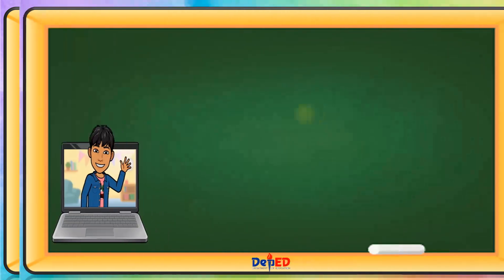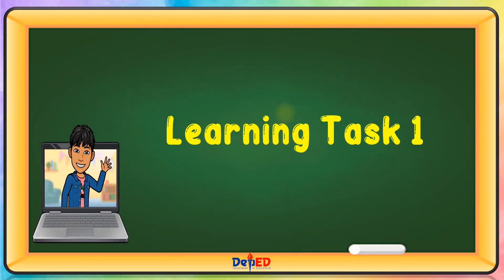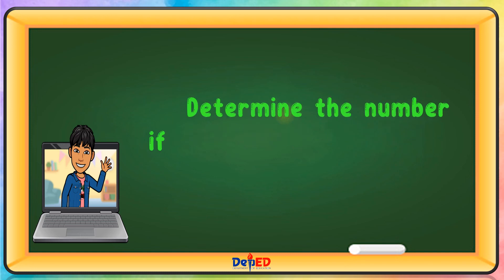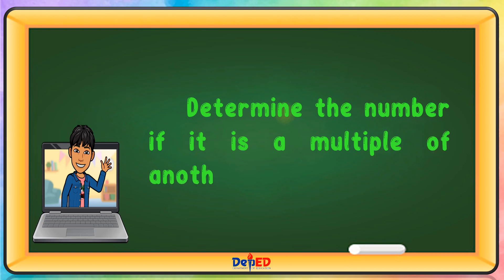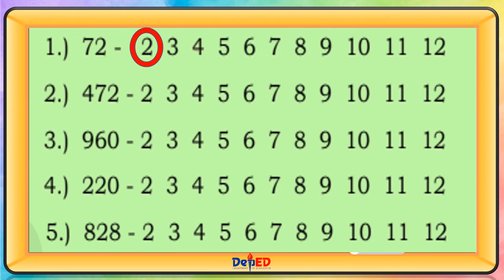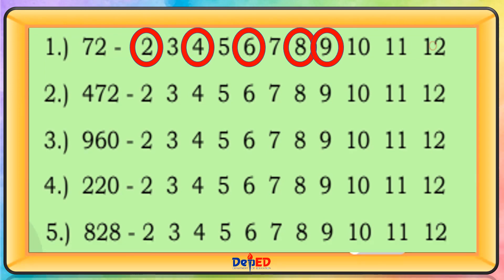Learning Task 1. Determine the number if it is a multiple of another number. 72: the multiples are 2, 4, 6, 8, 9, and 12.